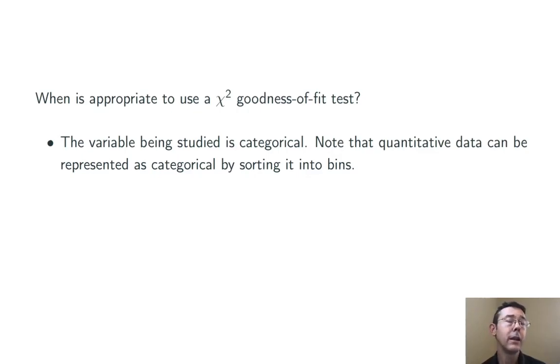you can sometimes make it categorical in a useful way just by sorting it into bins. One way or another, chi-squared goodness-of-fit tests deal with categorical variables.